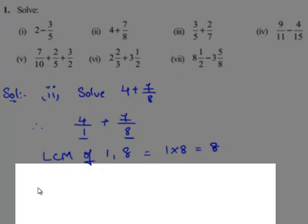Now we find the equivalent fractions for 4 by 1 and 7 by 8. To obtain the common denominator 8, we multiply 4 by 1 by 8 on both the numerator and denominator.